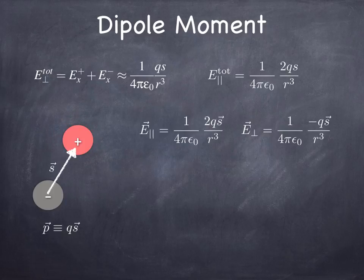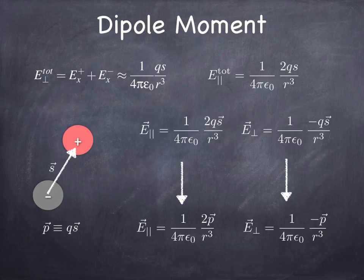Now, if you think of the dipole as the product of q times s, we can simplify this even further by replacing q times s with just p. So if you tell me the dipole moment, I can calculate the field on the axis and off the axis using these two results.